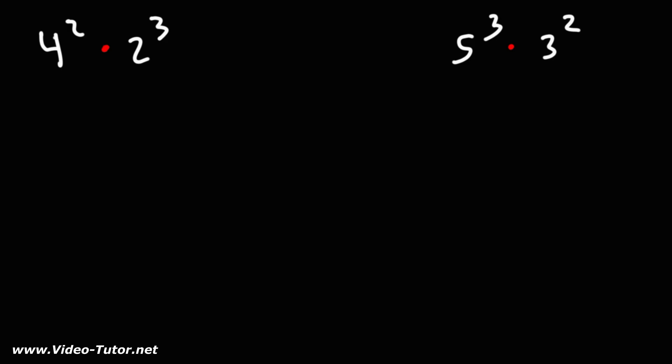4 squared times 2 to the 3rd. 4 squared means that we're multiplying two 4s together. 2 to the 3rd means that we're multiplying three 2s together.